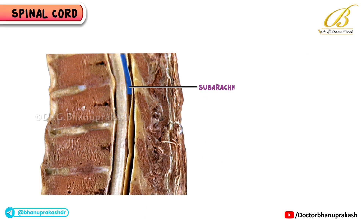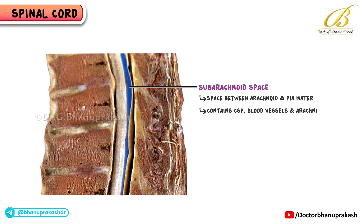Subarachnoid space: the space between the arachnoid and pia mater. It contains cerebrospinal fluid (CSF), blood vessels, and tiny connective tissue filaments called arachnoid trabeculae.